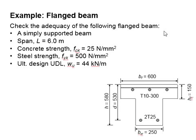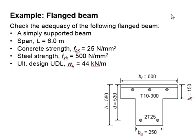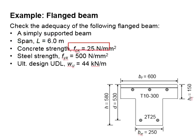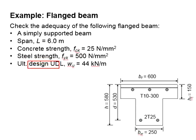Let us try to do an example related to a flanged beam. The question asks us to check the adequacy of a flanged beam. The beam is simply supported with an effective span of 6 meters. The concrete strength is 25 MPa, the specified yield strength is 500 MPa, and the design UDL is 44 kN per meter.